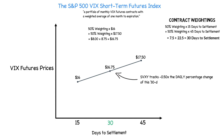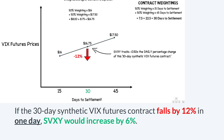Once we've done all that, we've successfully calculated what some people call the 30-day synthetic VIX Futures contract. It's called synthetic because it doesn't actually exist — we've calculated that VIX Futures contract price from the first and second month VIX Futures that actually exist. All we're doing is calculating a VIX Futures contract with a weighted average time to maturity of 30 days or one month. This index is exactly what SVXY is tracking the inverse of on a daily basis.